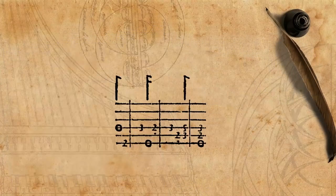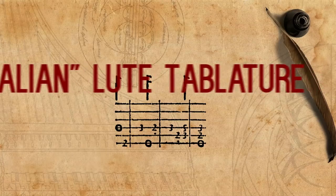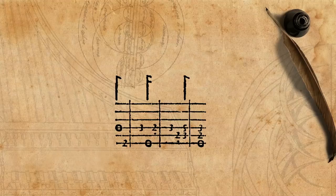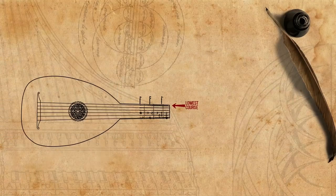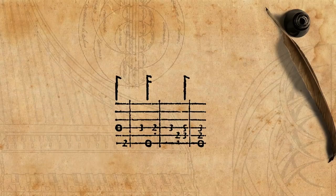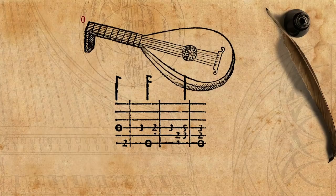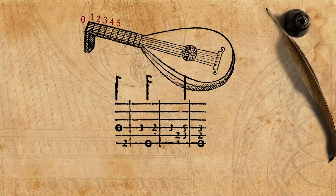This numerical Lute Tablature, also known today as the Italian Lute Tablature, is very simple. The six lines represent the six courses of the lute, with the top line as the lowest course. The notes are represented by numbers indicating which fret must be stopped, with zero as an open course, one as the first fret, and so on.